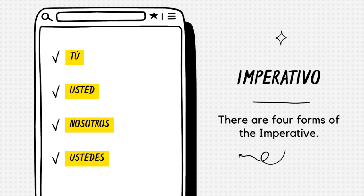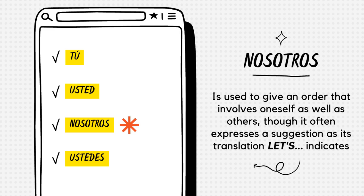There are four forms to be used when you're using the imperative, or the imperativo. You use the pronouns tú, usted, nosotros, and ustedes. Please note that the nosotros form is used to give an order that involves oneself as well as others, though it often expresses a suggestion, as its translation — "let's" — indicates.